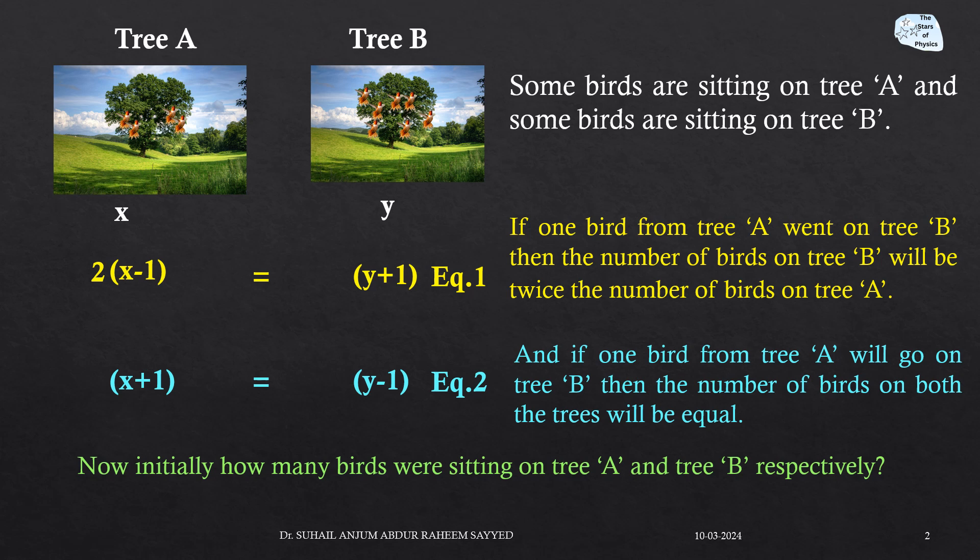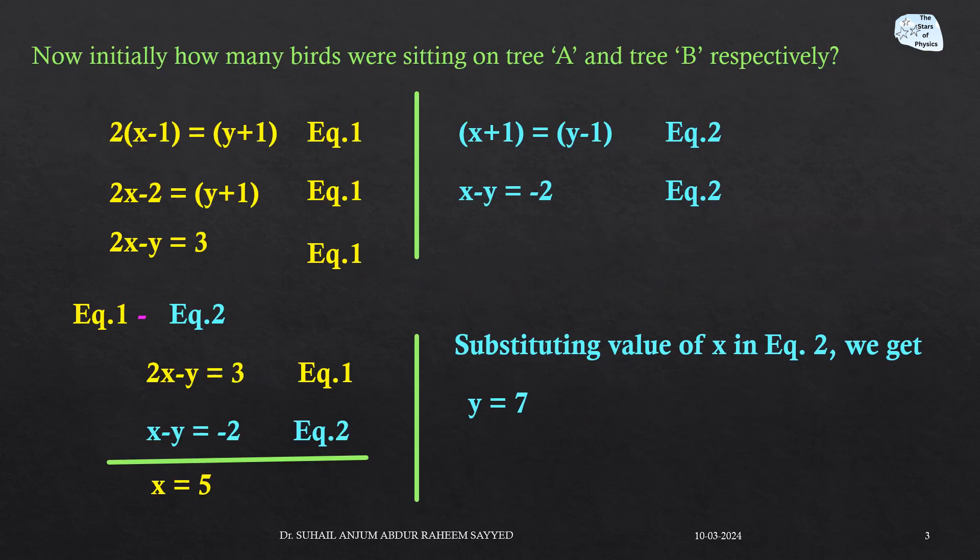We need to find how many birds were initially on tree A and tree B, so we solve these two equations. Equation 1: 2(x minus 1) equals y plus 1, which simplifies to 2x minus y equals 3. Equation 2: x plus 1 equals y minus 1, which simplifies to x minus y equals minus 2.